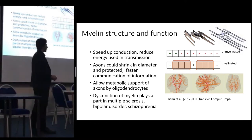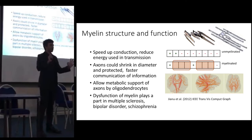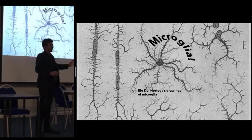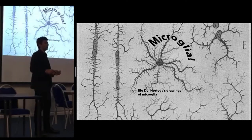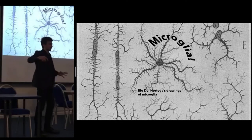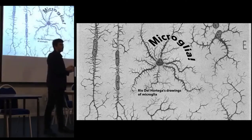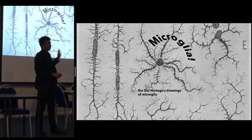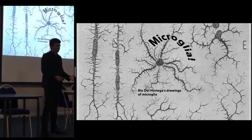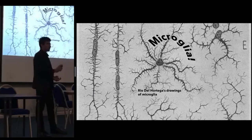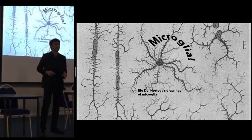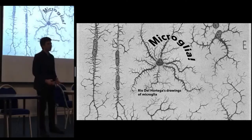Speaking of dysfunction, there is one type of cell particularly suited to combat it — the microglia. As you remember, microglia were once primitive macrophages that invaded the brain tissue during early development. You might call them the immune cells of the brain, but I will assure you that their functions are much more than just clearing up debris after damage or fighting infection.